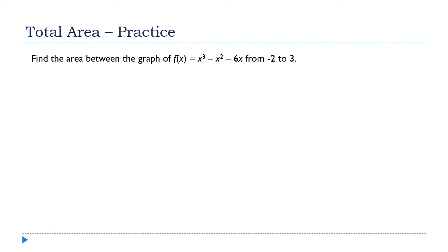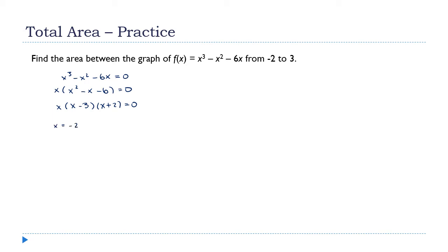Now a practice problem. First I need to find the roots of f(x) = x³ - x² - 6x, since the roots are where the function potentially changes sign. Setting x³ - x² - 6x = 0 and factoring out x: x(x² - x - 6) = x(x - 3)(x + 2) = 0. So I get three values: x = -2, 0, and 3. Notice that -2 and 3 are the endpoints of the interval.